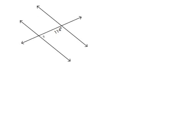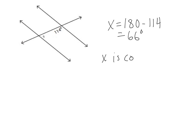Next question. Again, I observe that I have two parallel lines and a transversal. I can see one of the angles is 114 degrees. I also notice that x is co-interior with 114 degrees. So to solve this, I would simply do x equals 180 minus 114. The answer I get is 66 degrees. Then to justify this, I would say x is co-interior with 114 degrees; therefore 180 minus 114 equals x. And I would be done — that's simple.